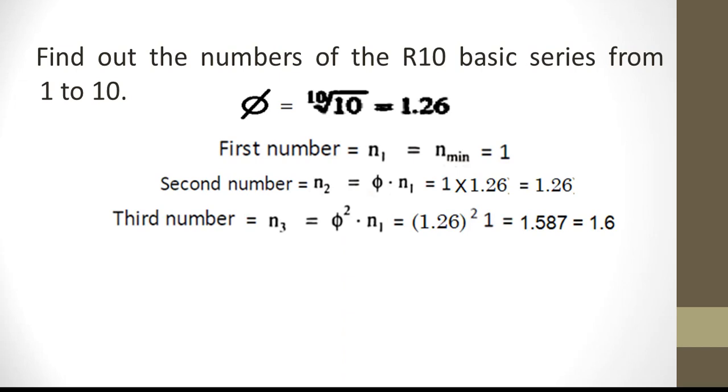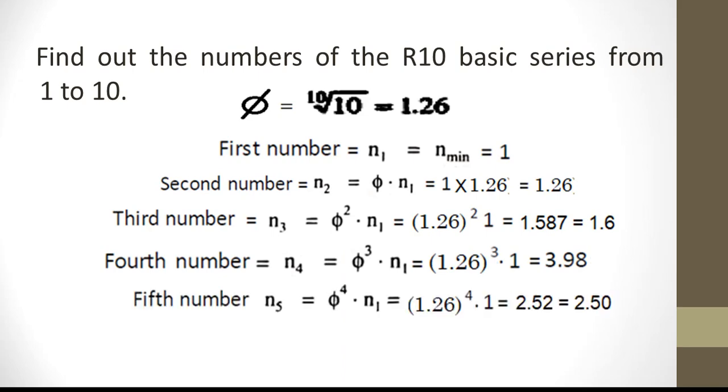N3 is phi squared N1 which turns out to be 1.587. We will round off and make it as 1.6. N4 is phi cube N1 which turns out to be 3.98. We will round off and make it as 4.